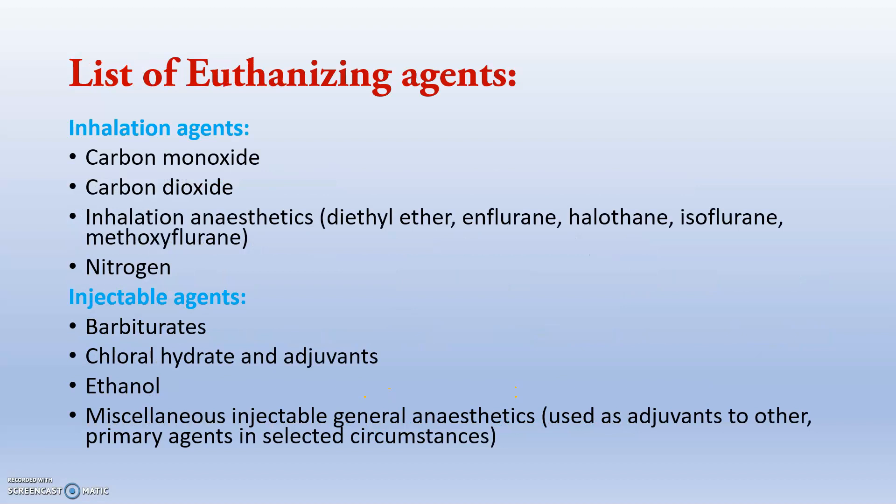Here is the list of euthanizing agents mainly used in the veterinary field. The inhalation agents are mainly carbon monoxide, carbon dioxide, and inhalation anesthetics used at higher doses — including diethyl ether, enflurane, halothane, isoflurane, and methoxyflurane. Nitrogen is also an inhalation agent. The injectable agents include barbiturates, chloral hydrate and its adjuvants, ethanol, and miscellaneous injectable general anesthetics, which are used at very high doses.